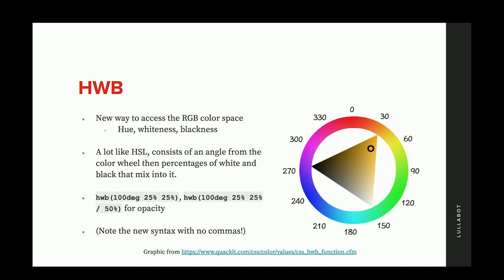The first new color function from Module 4 is HWB — another RGB color space function. Instead of hue, saturation, and lightness, this one uses hue, whiteness, and blackness. You can see the color wheel from 0 to 360 with all the hues, and then whiteness and blackness within a triangle — if you want more black, you move toward one part of the triangle; for white, toward the other. I haven't done anything with HWB yet, but I think it makes more sense than HSL.